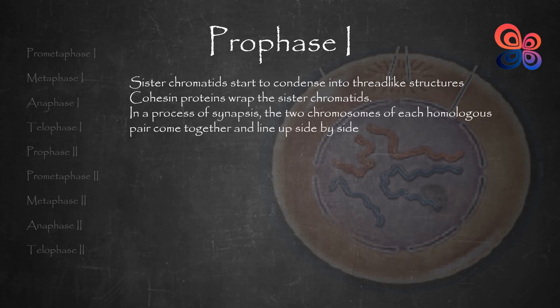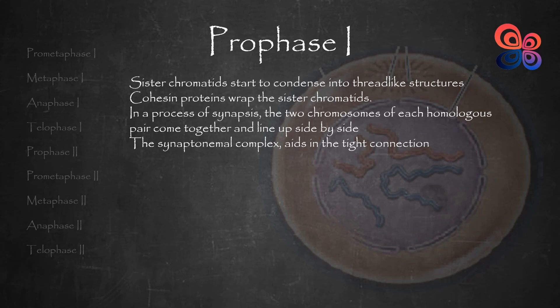In a process known as synapsis or pairing, the two chromosomes of each homologous pair come together and line up side by side in a zipper-like manner. The synaptonemal complex, a protein scaffolding, aids in the tight connection. The homologs are known as tetrads when fully coupled, because each one has four chromatids. In mitosis, there is no equivalent of chromosomal pairing.